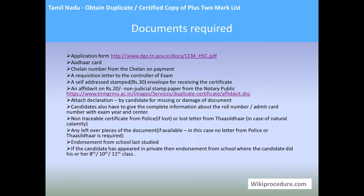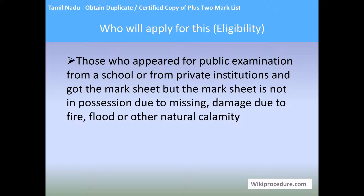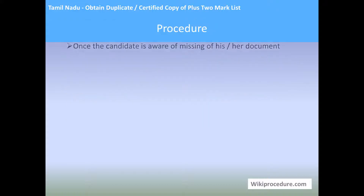Endorsement from the school last studied is a must. If the candidate appeared privately, the endorsement from the school where the candidate completed eighth, tenth, or ninth class should be enclosed. If the department finds any document missing, your application can be rejected. Eligibility: those who appeared for a public examination from a school or private institution and whose mark sheet is not in position due to missing or damage by fire, flood, or other natural calamity.